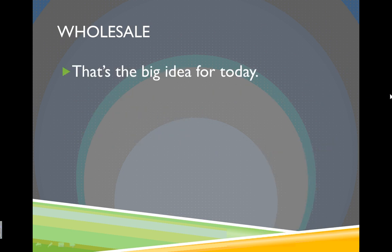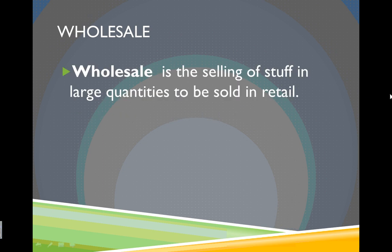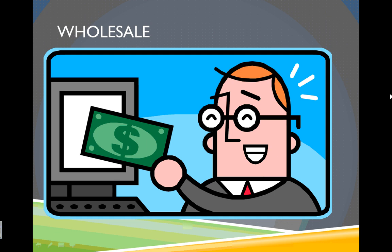That's the big idea for today — thinking about where retailers get things from. As a review, here is the important vocabulary from today's video: wholesale, which is the selling of stuff in large quantities to be sold in retail; the wholesale price, which is the price of buying a whole lot of things at once; and profit, which is the money made from that transaction. Thank you for watching. We'll continue investigating wholesale price and see where wholesalers get their items to sell to retailers in our next upcoming edition of STUFF.